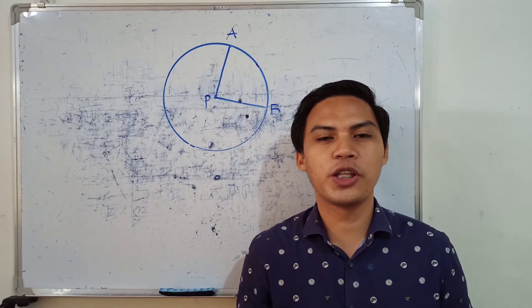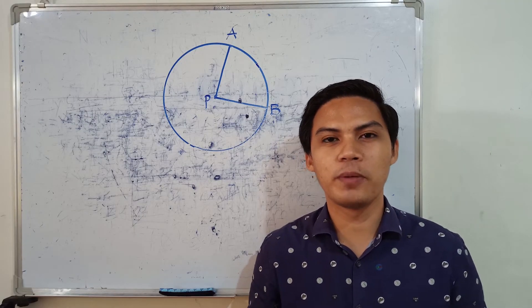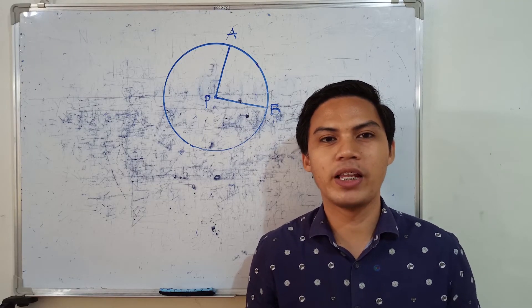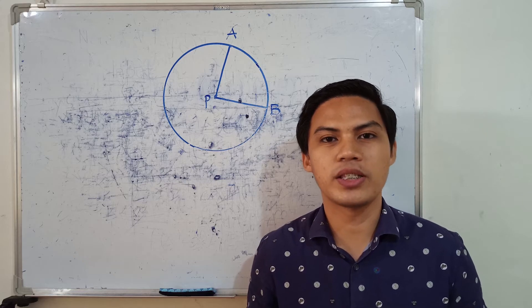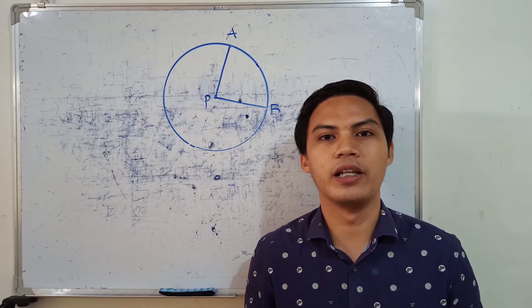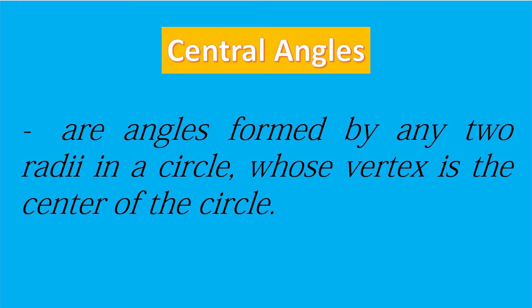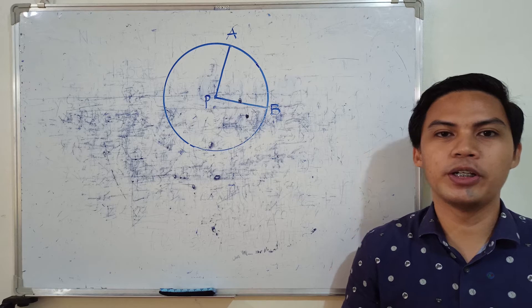Good day learners, today we're going to talk about central angles. Central angles are angles formed by any two radii in a circle whose vertex is the center of the circle.